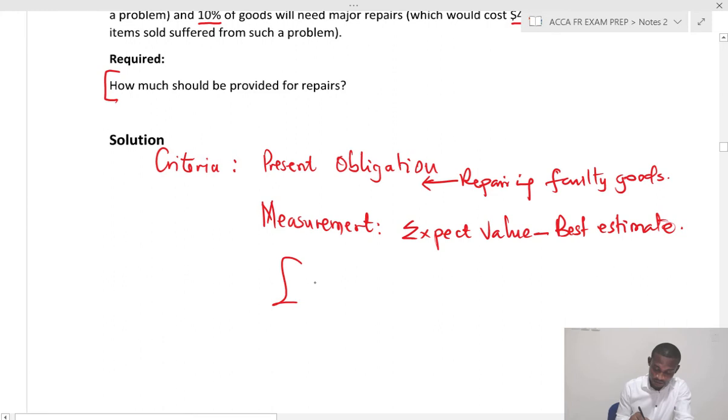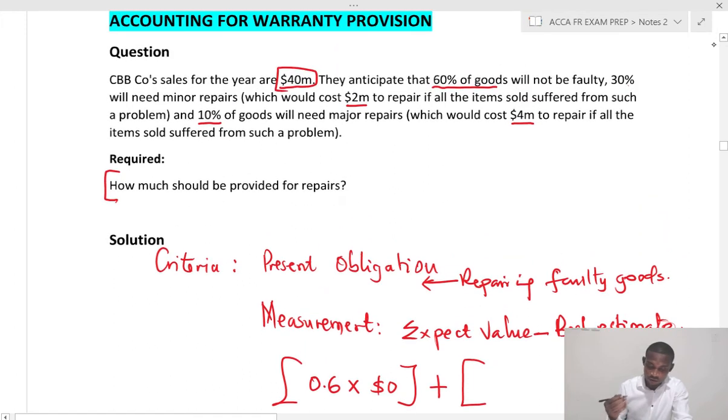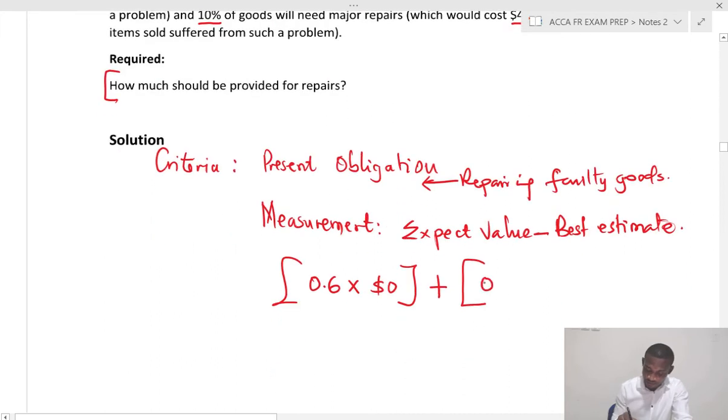Because we are finding the expected values, 30% of the goods when they are returned would have a cost of 2 million. So what we do is 30% times the cost of 2 million.